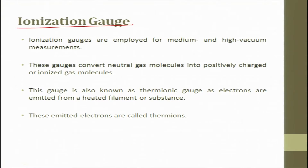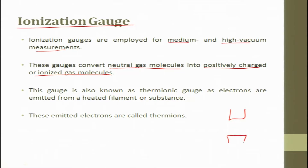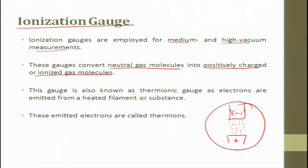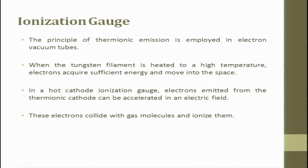Next is the ionization gauge. Ionization gauges are employed for medium and high vacuum measurement. These gauges convert neutral gas molecules into positively charged or ionized gas molecules. The gauge is also known as a thermionic gauge as electrons are emitted from a heated filament. The emitted electrons are known as thermions — thermally emitted ions. The principle of thermionic emission is employed in electron vacuum tubes.